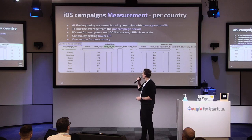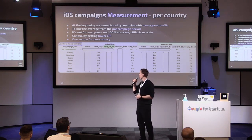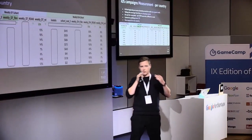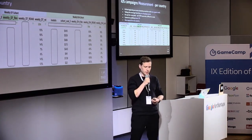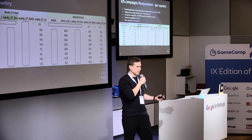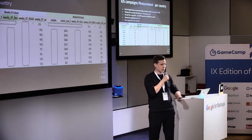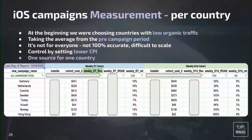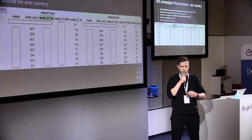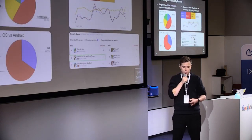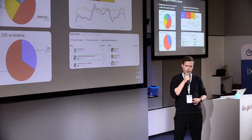Another thing is that we can control the campaign by setting a lower CPI, so we're not going to spend millions of dollars. The bucket of users is smaller and sooner or later it's going to deplete, but we can easily control our spending. As you can see here, these are CPI campaigns — as Mariusz also mentioned. Our D14 ROAS is pretty high, so from a business perspective it works very well for our company.